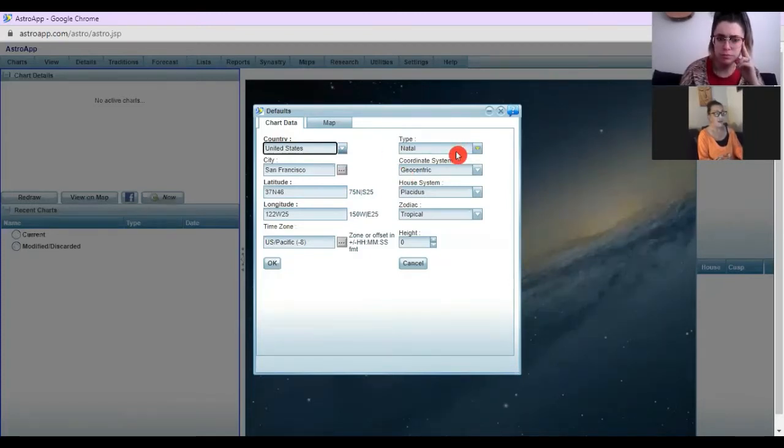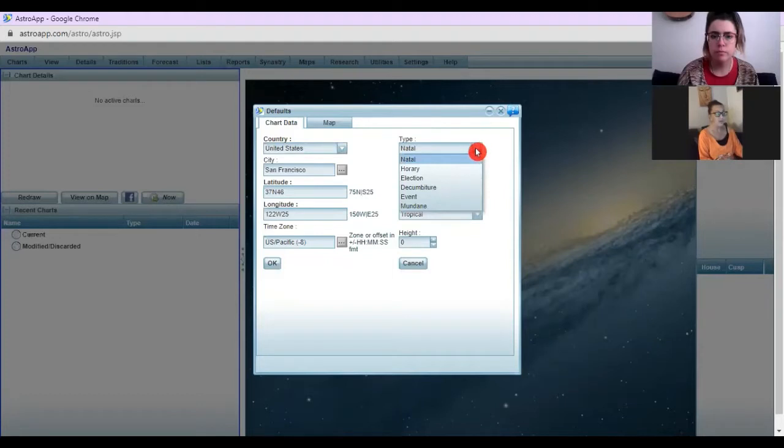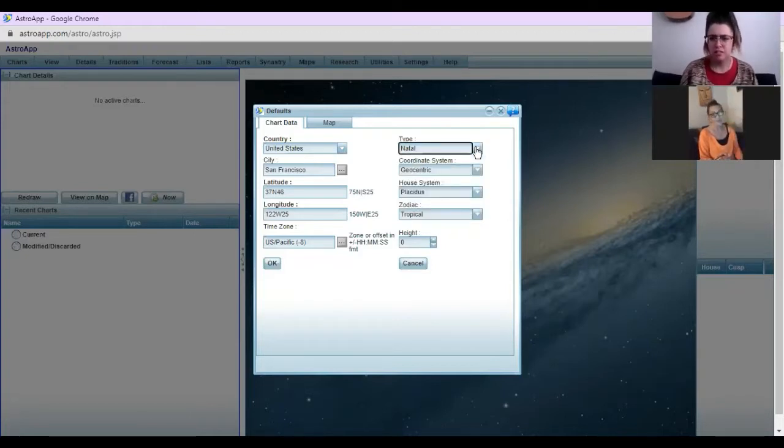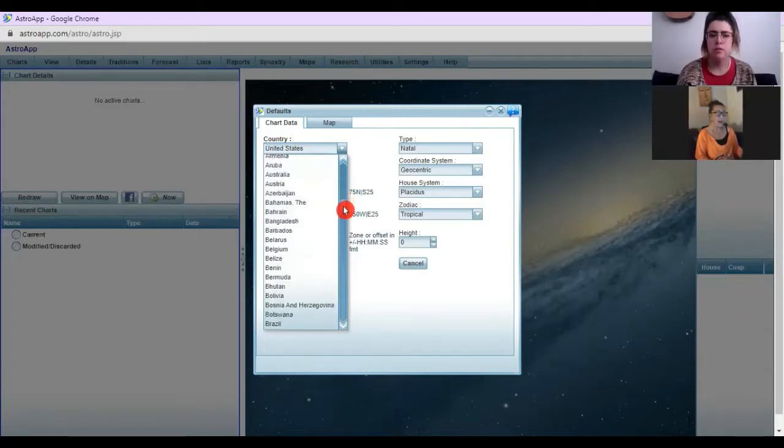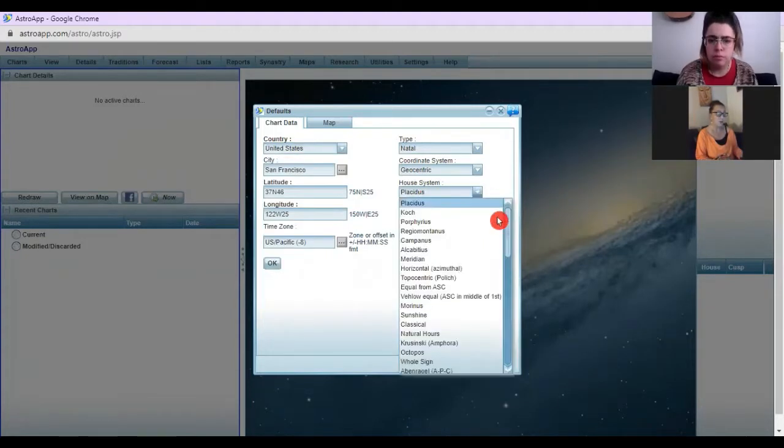Okay, so mine's just set to natal. That will, I suppose, change with whatever chart wheels you're drawing out anyway. So you want it, which is a basic. Yeah, that's a good default. A coordinate system, I've set mine to geocentric. Okay, yeah. And the house system, topocentric polish. Okay, gotcha. And what's topocentric polish? Is this the 13 sign system?